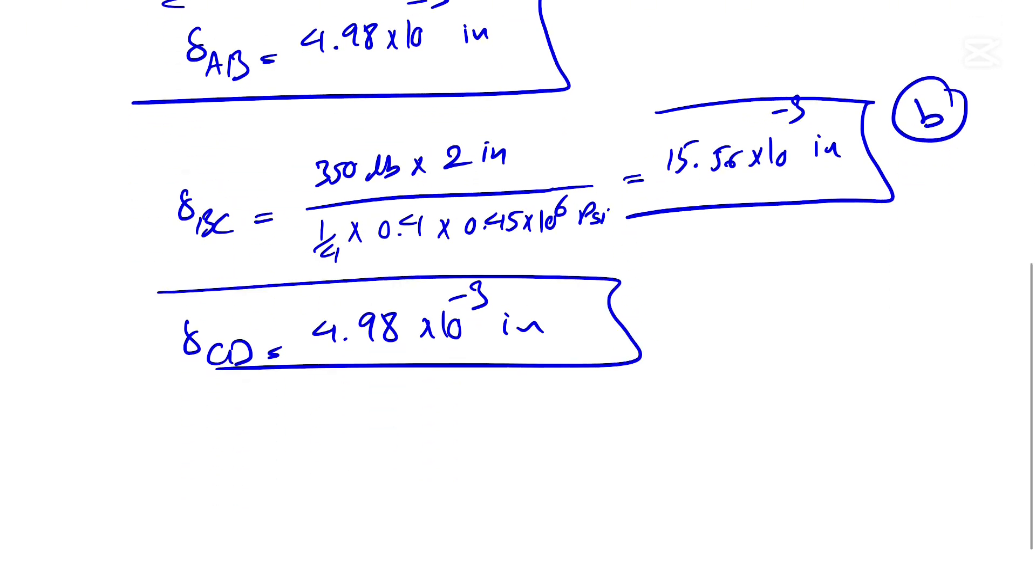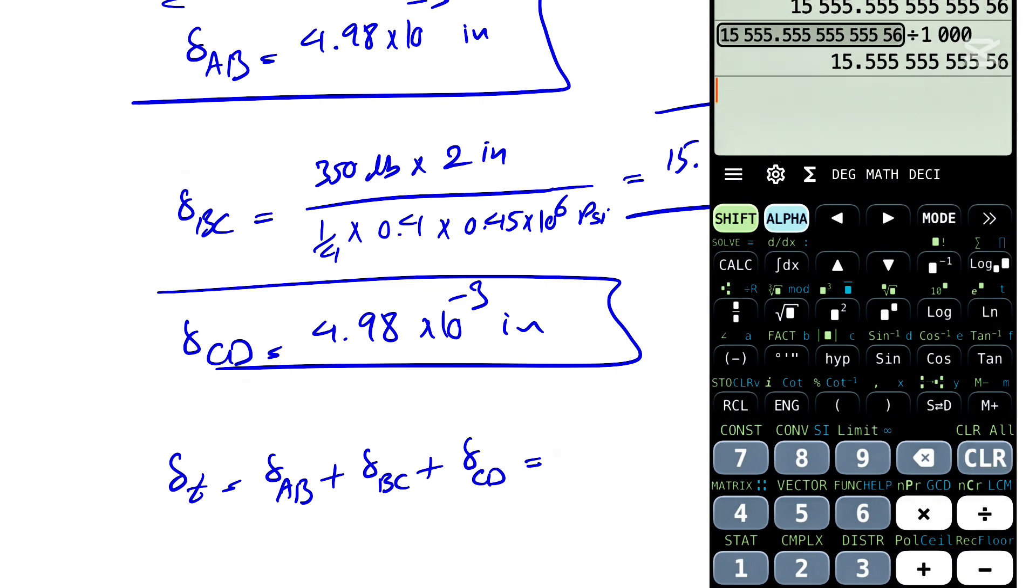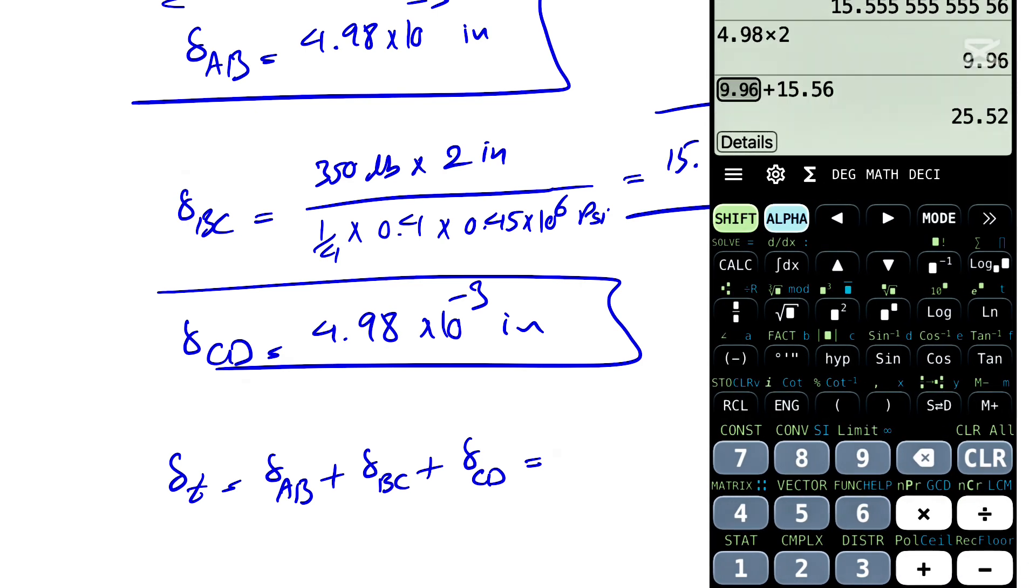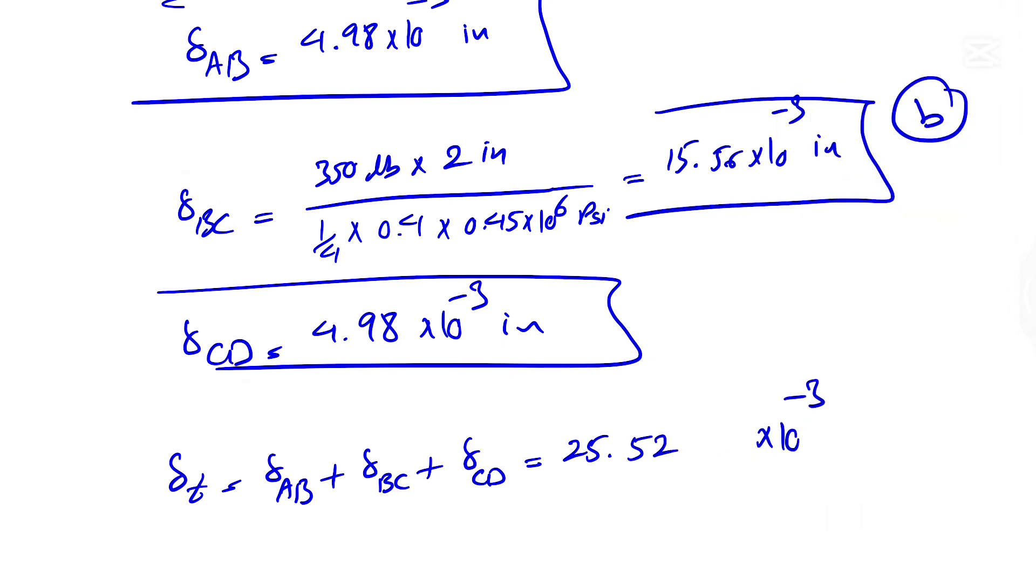And if we want to find the total deformation, we'll have the deformation of AB plus the deformation of BC plus the deformation of CD. We're just going to factor 10 to the minus 3, so we have 4.98 times 2 plus 15.56, which is going to be 25.52 times 10 to the minus 3 inches. So that would be the answer for the A part of the question, or the total deformation of this specimen.